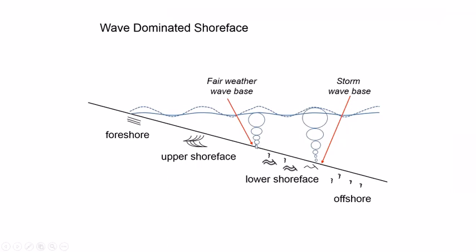During fair weather, only sediments from the fair-weather wave base toward shore are affected by waves. During storms, the zone of reworking shifts seaward — bioturbated sediments occur beyond the storm wave base, and during storms everything is reworked by hummocky cross-stratification. As storms subside, burrowing resumes, and from fair-weather wave base landward sediments are reworked into cross-bedded units, with the beach showing seaward-inclined parallel to subparallel lamination.